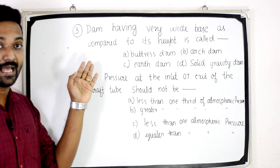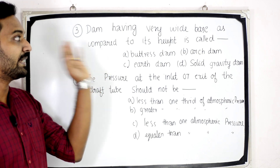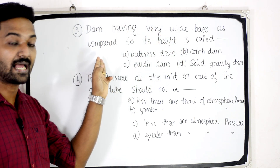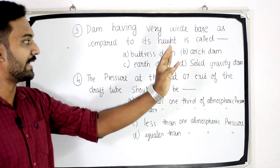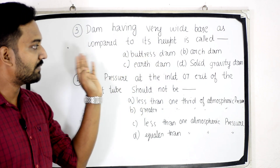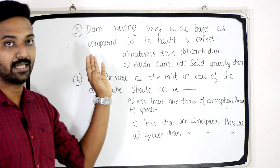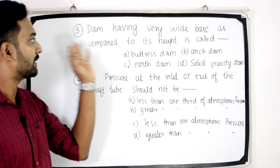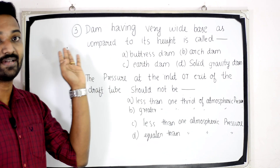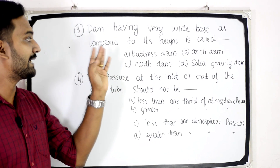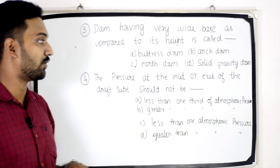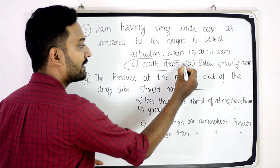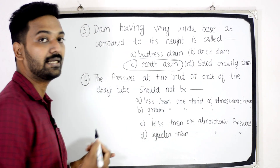Third question. A dam having a very wide base as compared to its height is called — Option A: Buttress Dam. Option B: Arch Dam. Option C: Earth Dam. Option D: Solid Gravity Dam. Answer: Option C, Earth Dam.